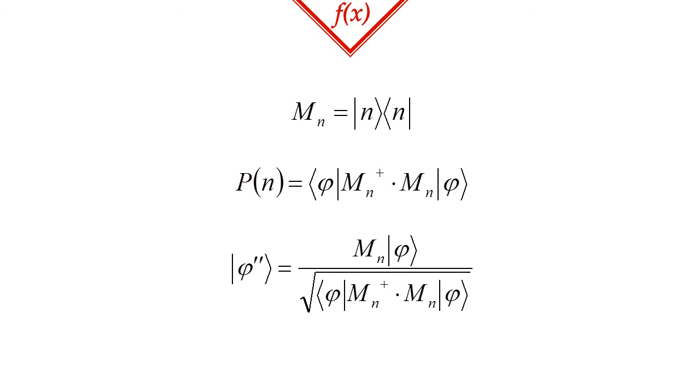So, this concludes our introduction to measurements. Here we have learned that each outcome of a measurement can be associated with a projection operator. The probability that we will find the system in the nth state can be calculated using the nth operator, and this same operator can be used to calculate the state after the measurement. Thanks for watching, goodbye.